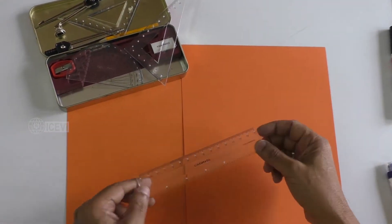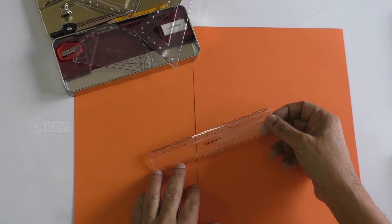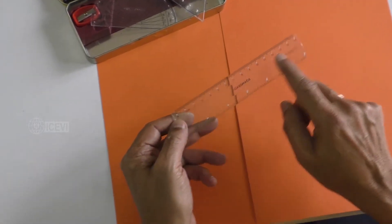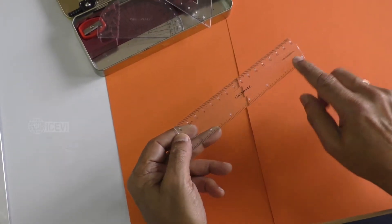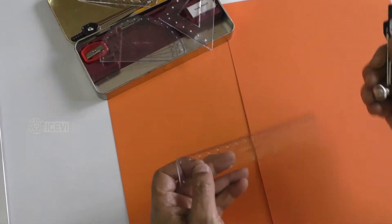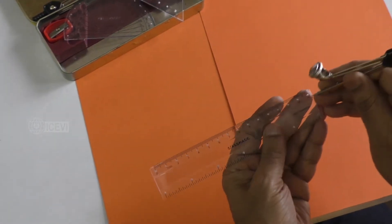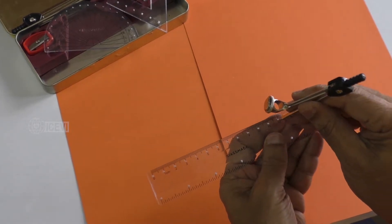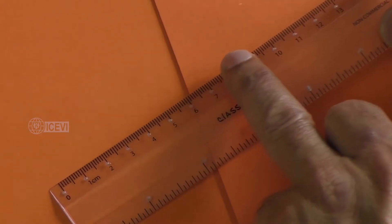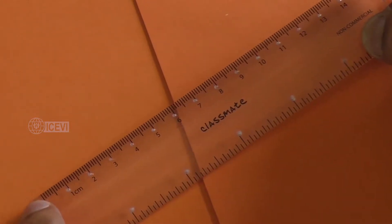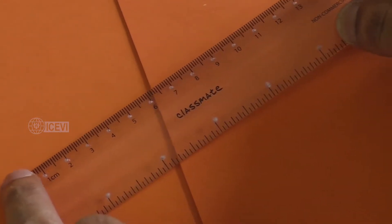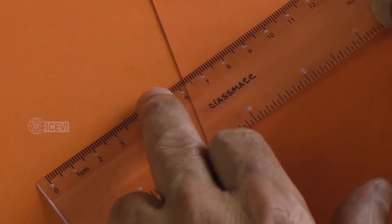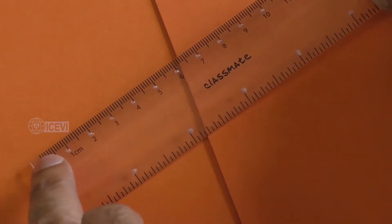What we have done is taken a needle and made a hole for every centimeter of the scale. This is tactile in nature, so the child will be able to identify 0, 1, 2, 3, 4, 5, 6, and so on.